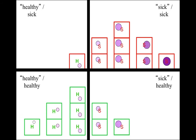Let's think about the consequences of these different decisions. Here you've made a correct diagnosis. Here you have people who are actually healthy, but you made them go through unnecessary treatment for leukemia, which is very painful. Here you have a person who was sick but you labeled them healthy, so now they're going to die. And then these are the people who are healthy and you didn't treat them — that's good. These are the people who appropriately received treatment.